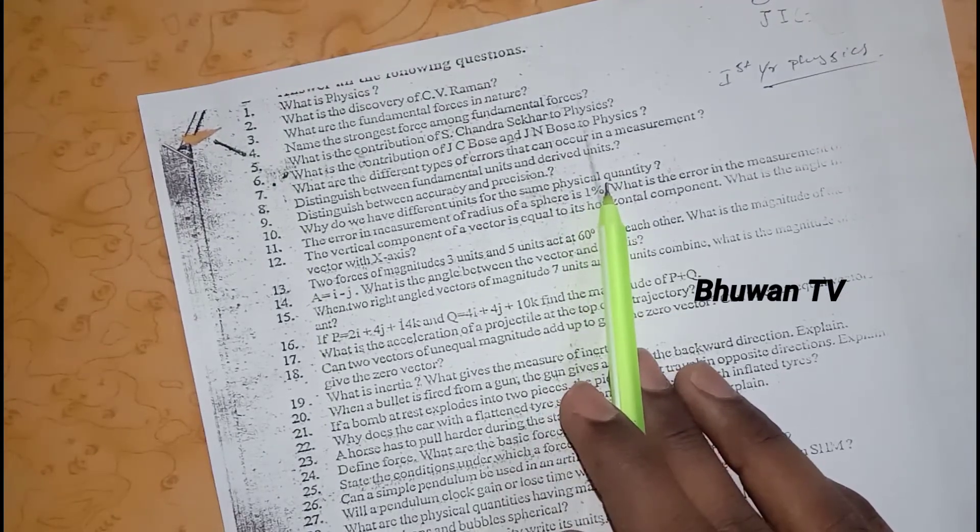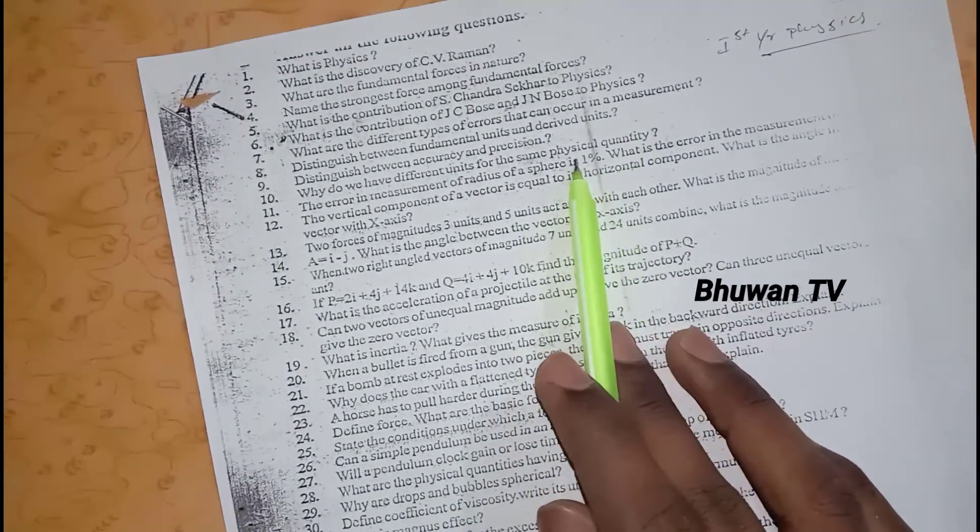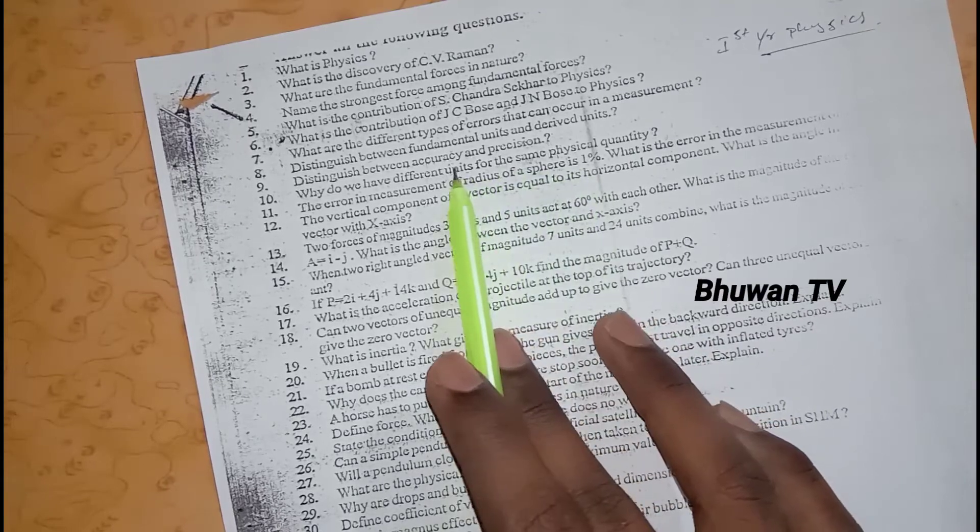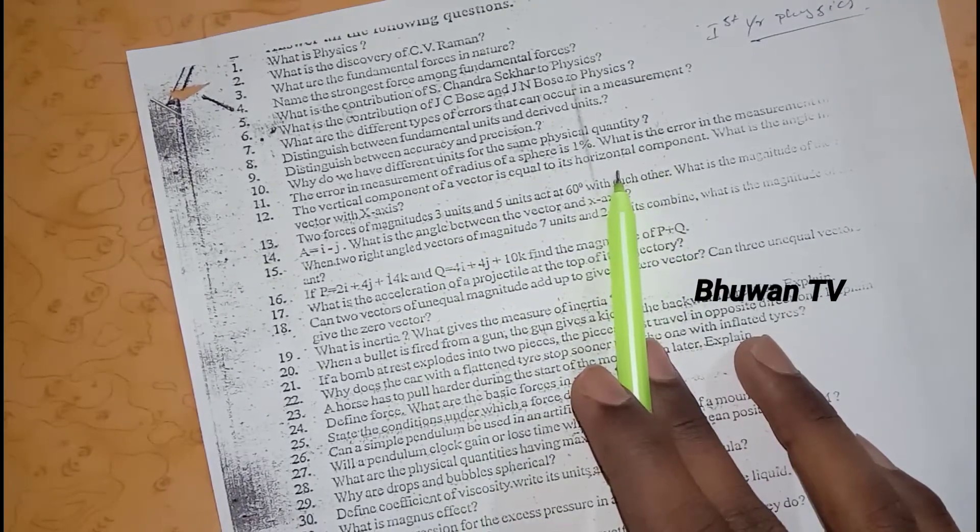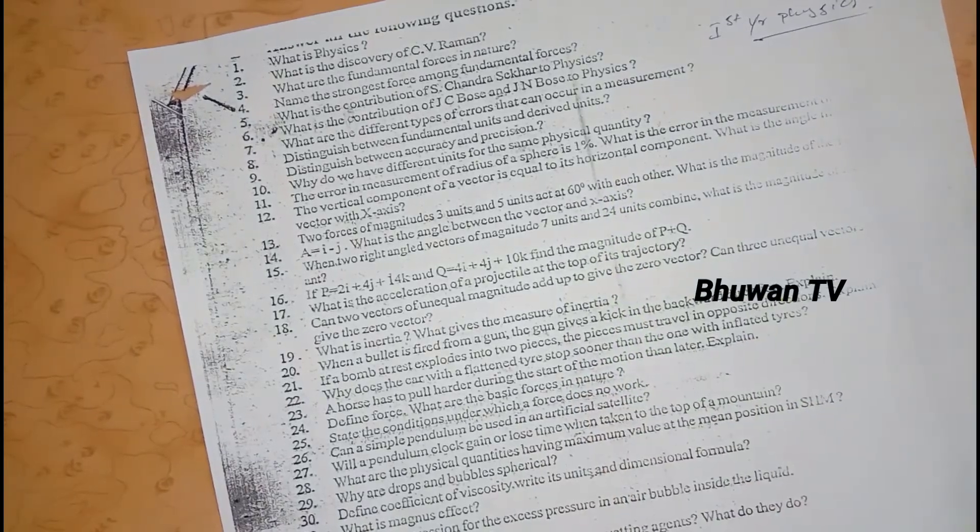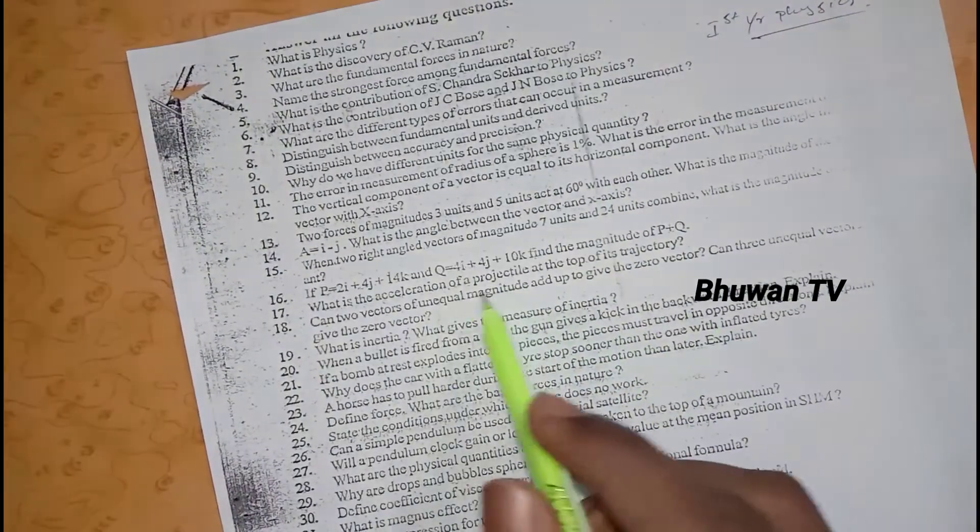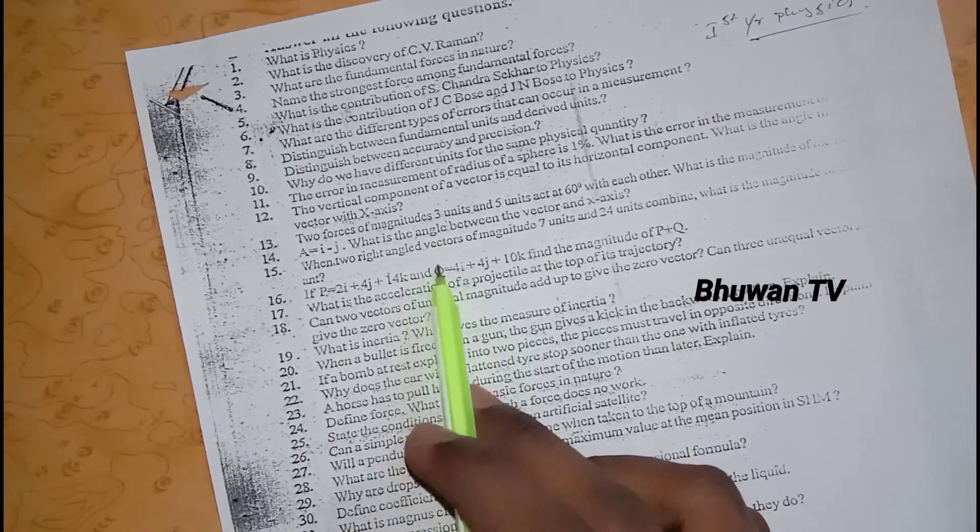What are the different types of errors that can occur in a measurement? Distinguish between accuracy and precision. Why do we have different units for the same physical quantity? And important is that magnitude is definite.